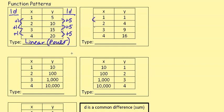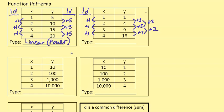For the next table, the x-values again add 1 each time. The y-values add 3, then 5, then 7 — not a first common difference. But taking differences of those: 5 - 3 = 2, 7 - 5 = 2, which is a second common difference. So this is a quadratic function, which is also a power function. If we got a third common difference, it would be cubic, and so on.